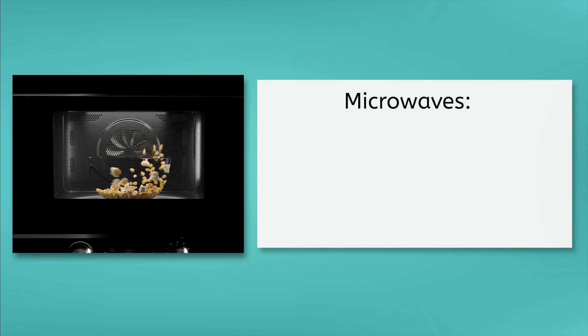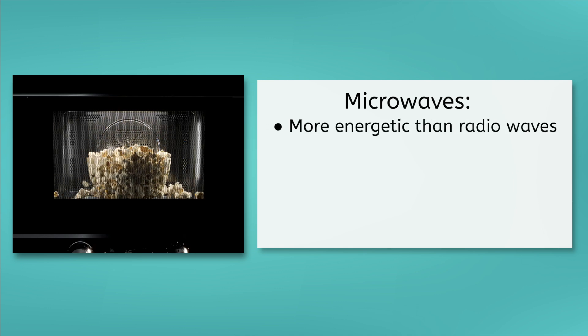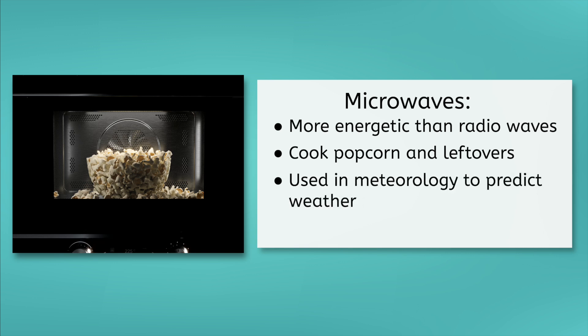Next up are microwaves. A bit more energetic than radio waves, with shorter wavelengths. These are the handy waves that cook your popcorn and heat up your leftovers. But it's not all about food. Microwaves are also the reason you can check the weather forecast. They bounce off clouds and rain to tell meteorologists what's happening in the skies. Microwaves are also crucial for point-to-point communication links and satellite communications.